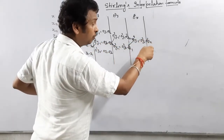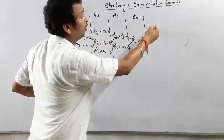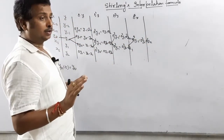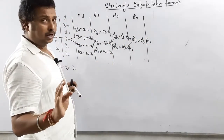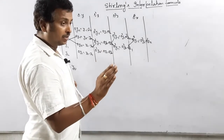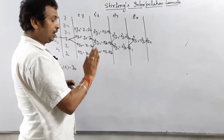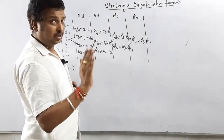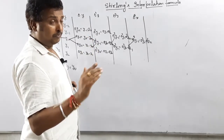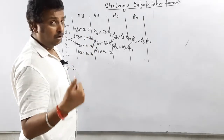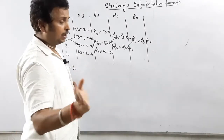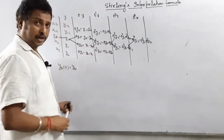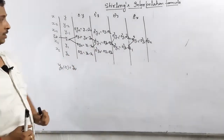The pattern is: one value, then two values (take average), one value, then two values (take average), and so on. If two values are required but only one is available, stop there — it is not required. Come to the last value and stop. This is the complete pattern for selecting table values.